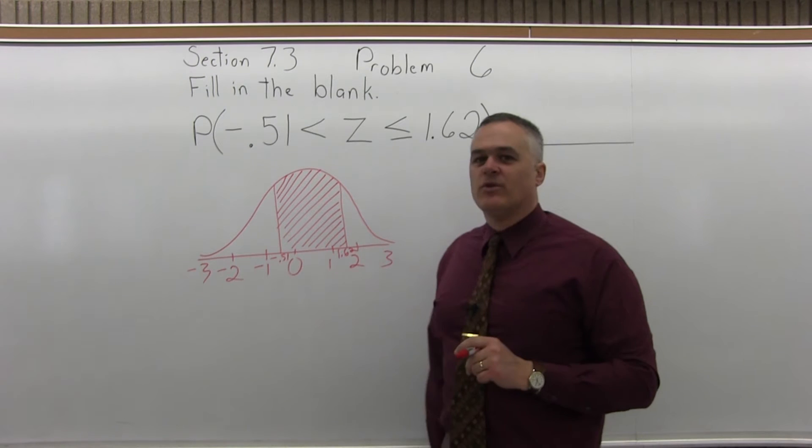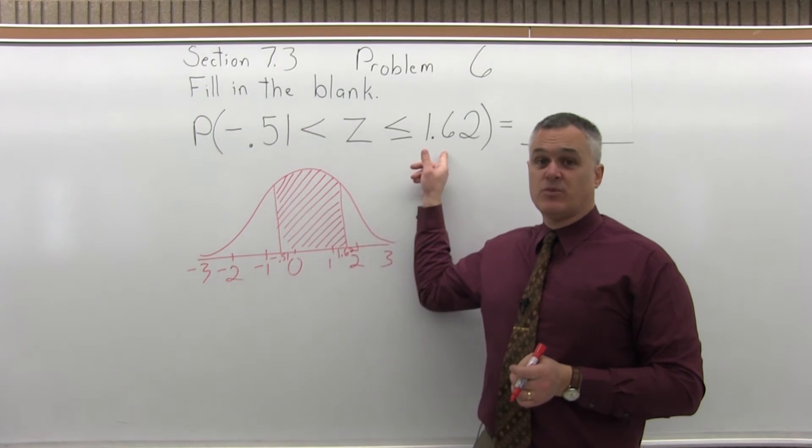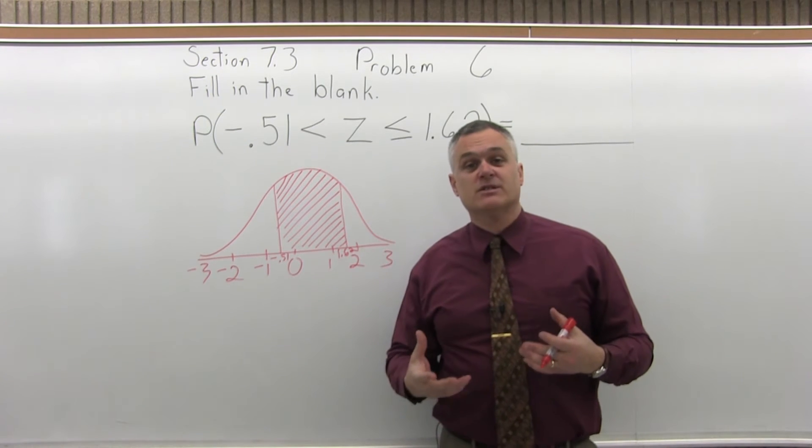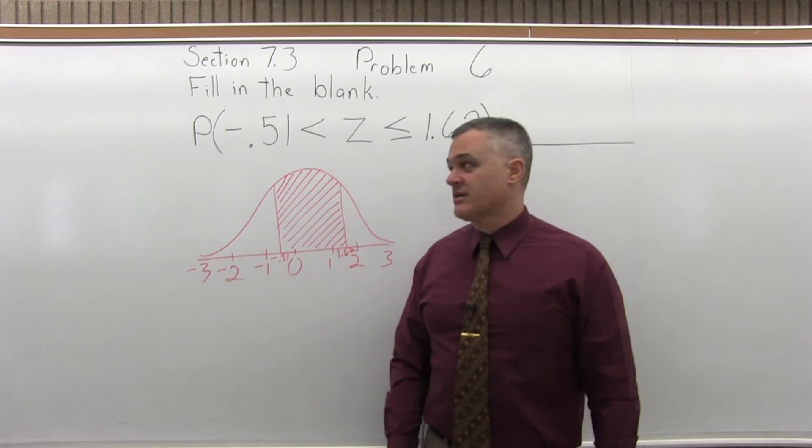That's what we're looking for. So what this means is we're going to have to look up both -0.51 and positive 1.62, get the two chart values and subtract them. All in between questions, you have to find two chart values and subtract them.